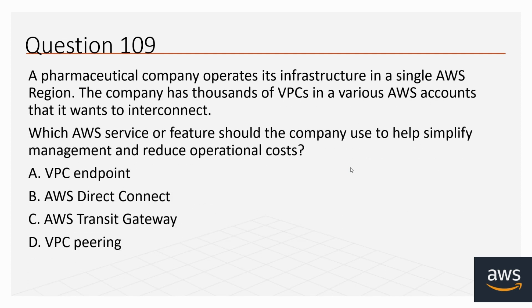Question number 109: A pharmaceutical company operates its infrastructure in a single AWS region. The company has thousands of VPCs in various AWS accounts that it wants to interconnect. Which AWS service or feature should the company use to help simplify management and reduce operational cost? Options: A. VPC Endpoint, B. AWS Direct Connect, C. AWS Transit Gateway, D. VPC Peering. The correct option is C, AWS Transit Gateway.